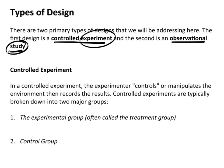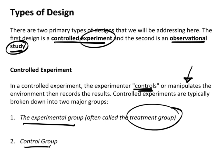There's actually a difference between those. In a controlled experiment, the experimenter controls or manipulates the environment, then records the results. Controlled experiments are typically broken down into two major groups: the experimental group, often referred to as the treatment group, and the control group. As an example, in a medical study, we control the environment and manipulate it by determining who gets how much of a drug.